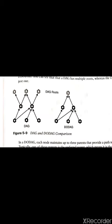Here we refer to it as a destination-oriented DAG. It is a directed acyclic graph rooted to one destination, and this occurs at a border router known as the DODAG root.